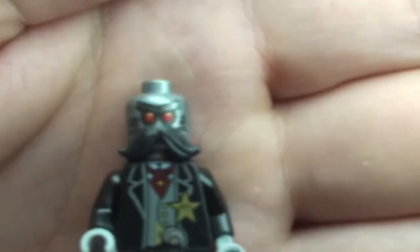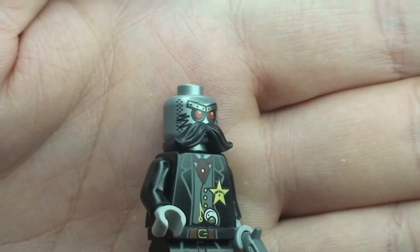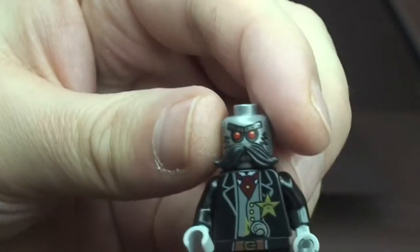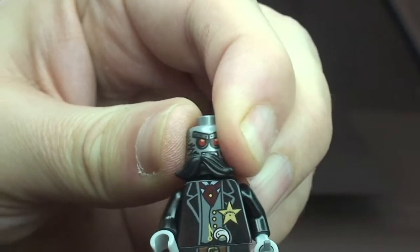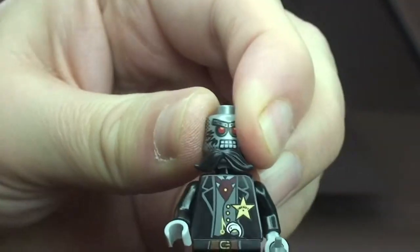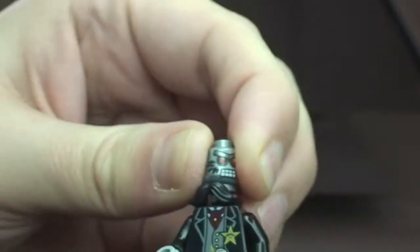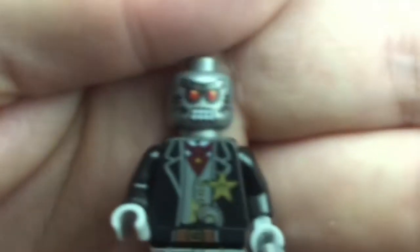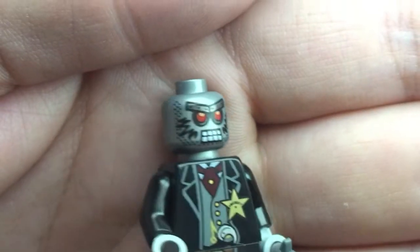A bit of a better look there at that face printing. And the mustache is just a separate piece, so if we just take his head off, there's that separate mustache piece. Put his head back on so you can see that face printing, a little bit more detail there.